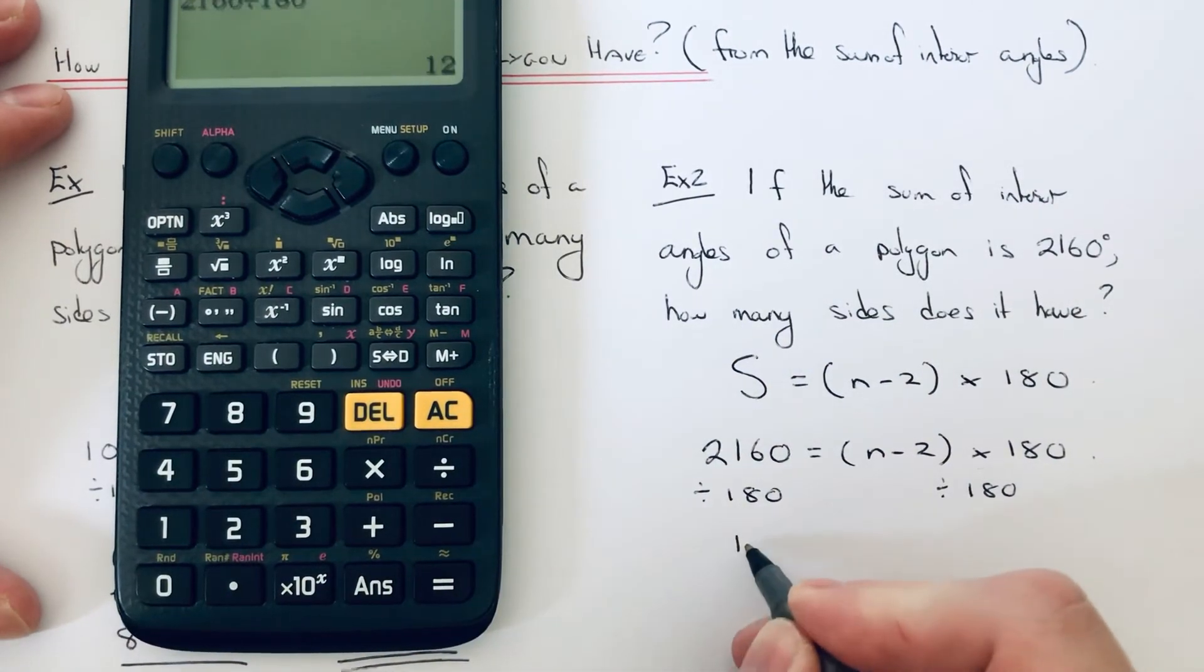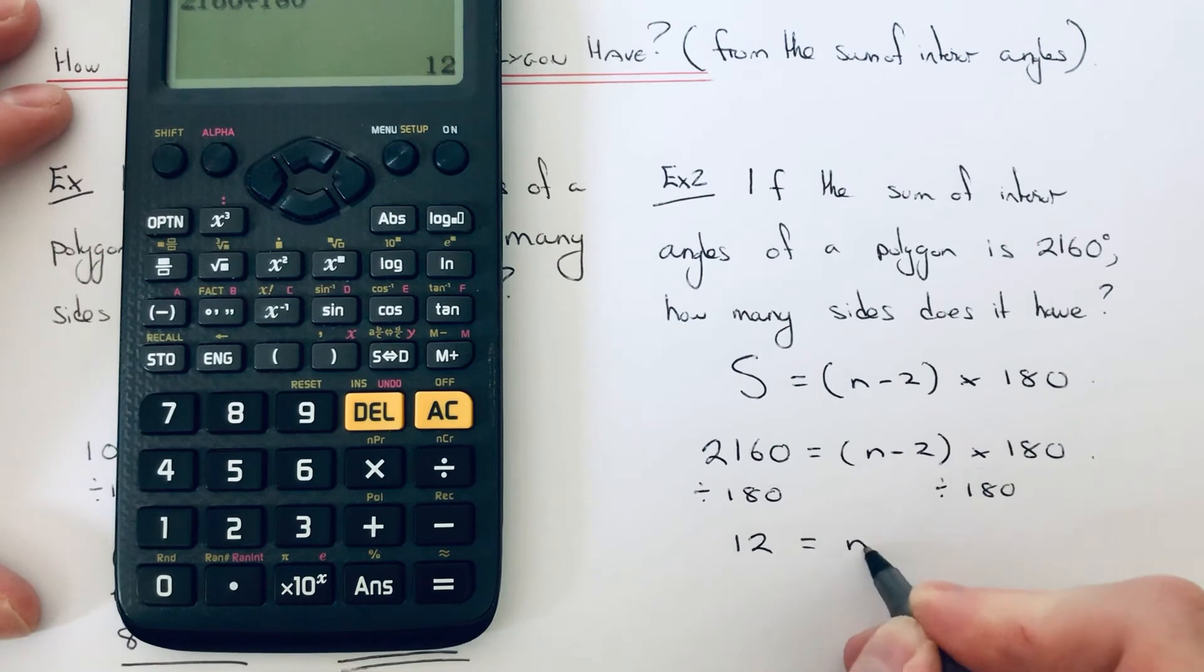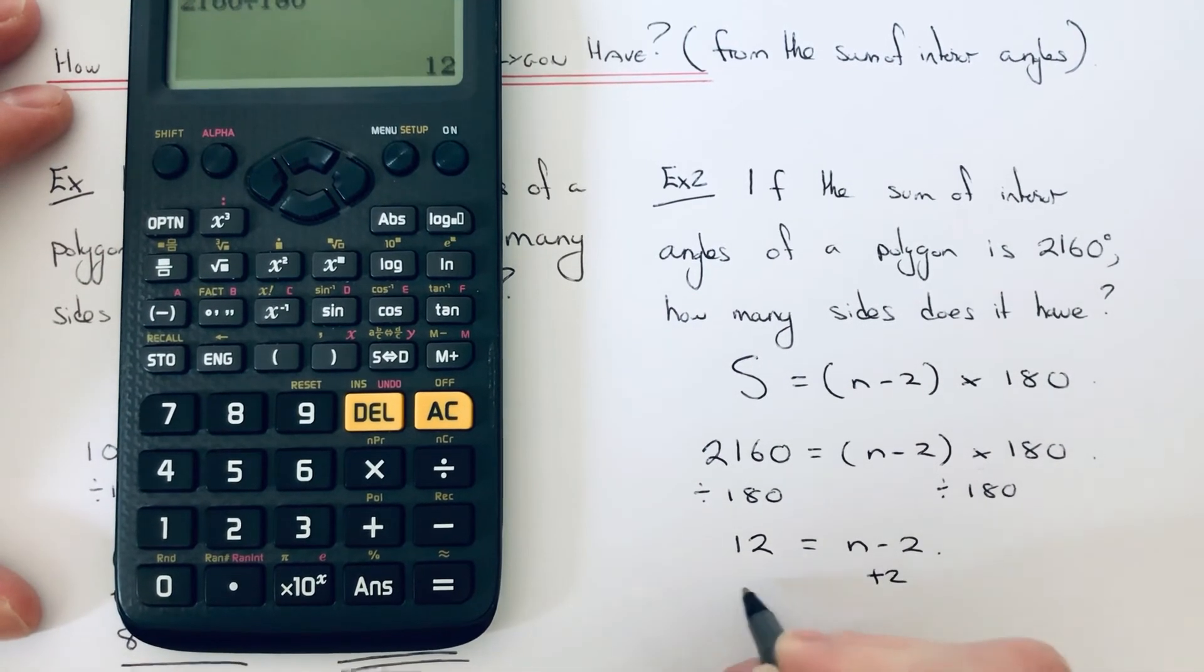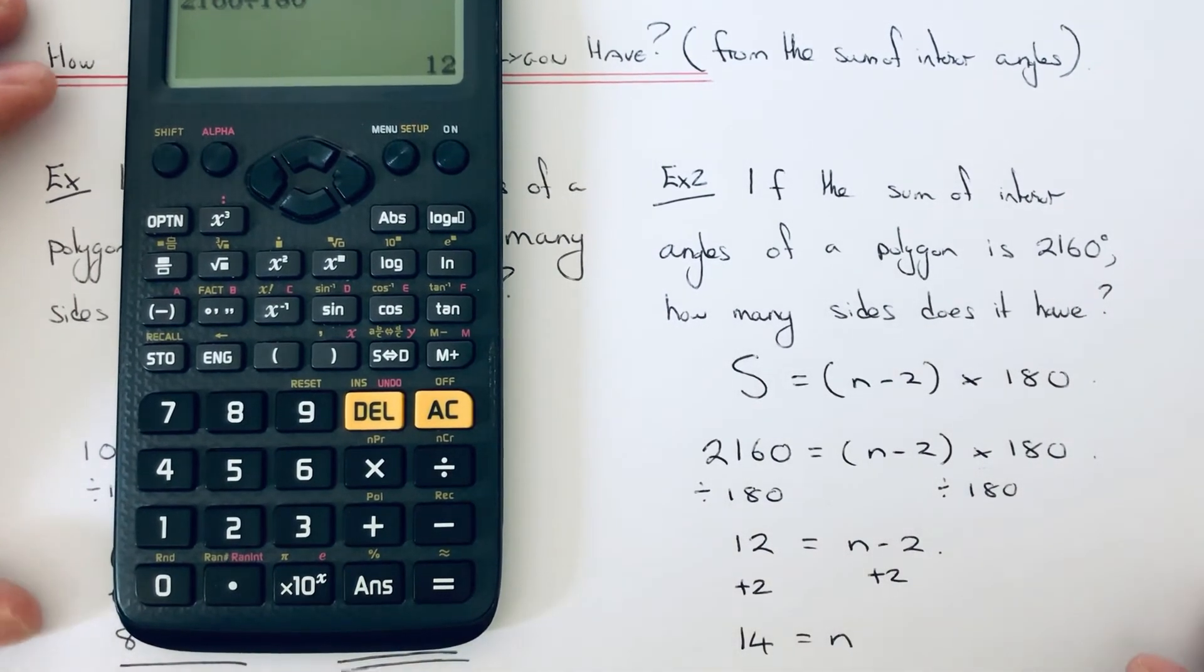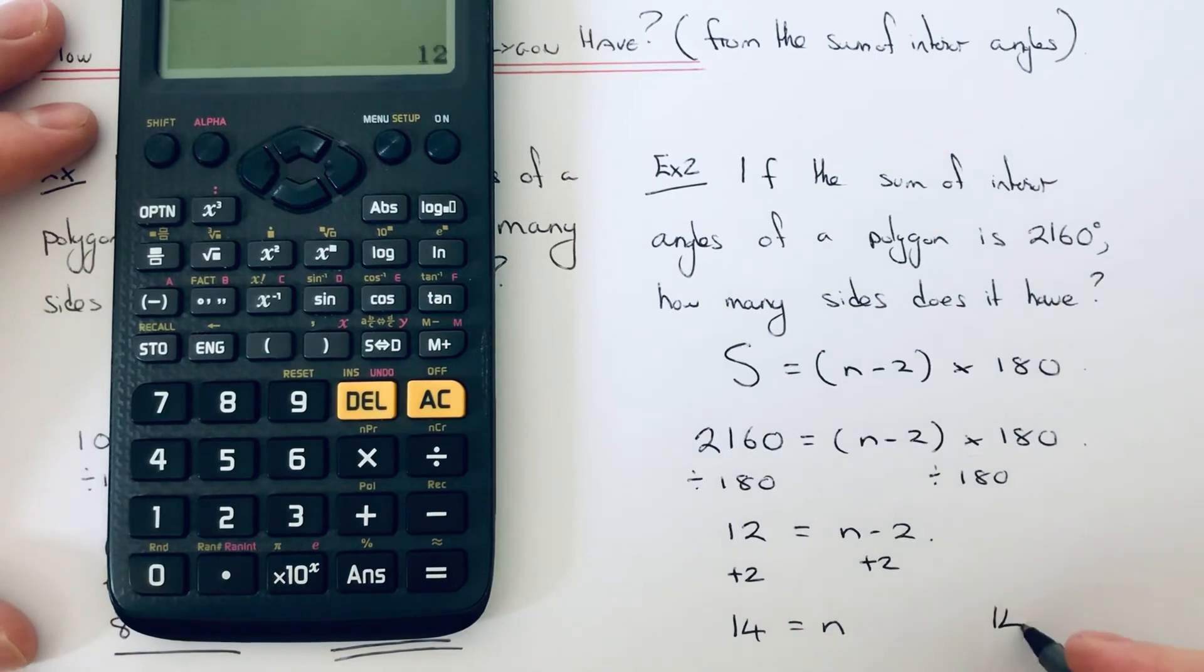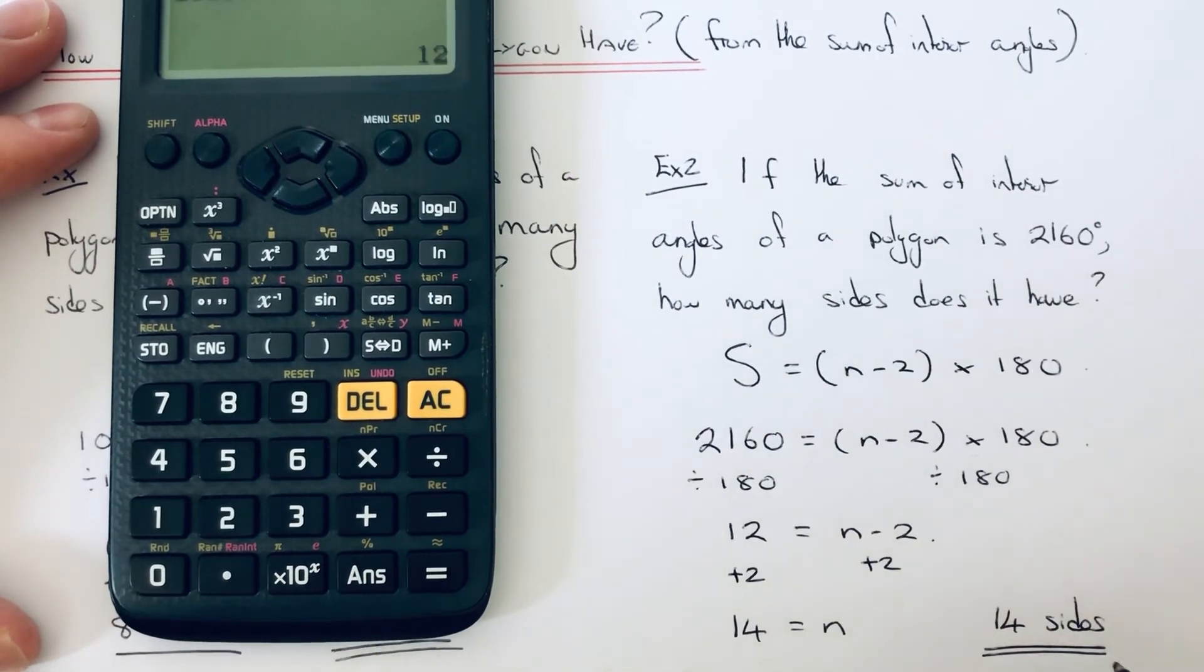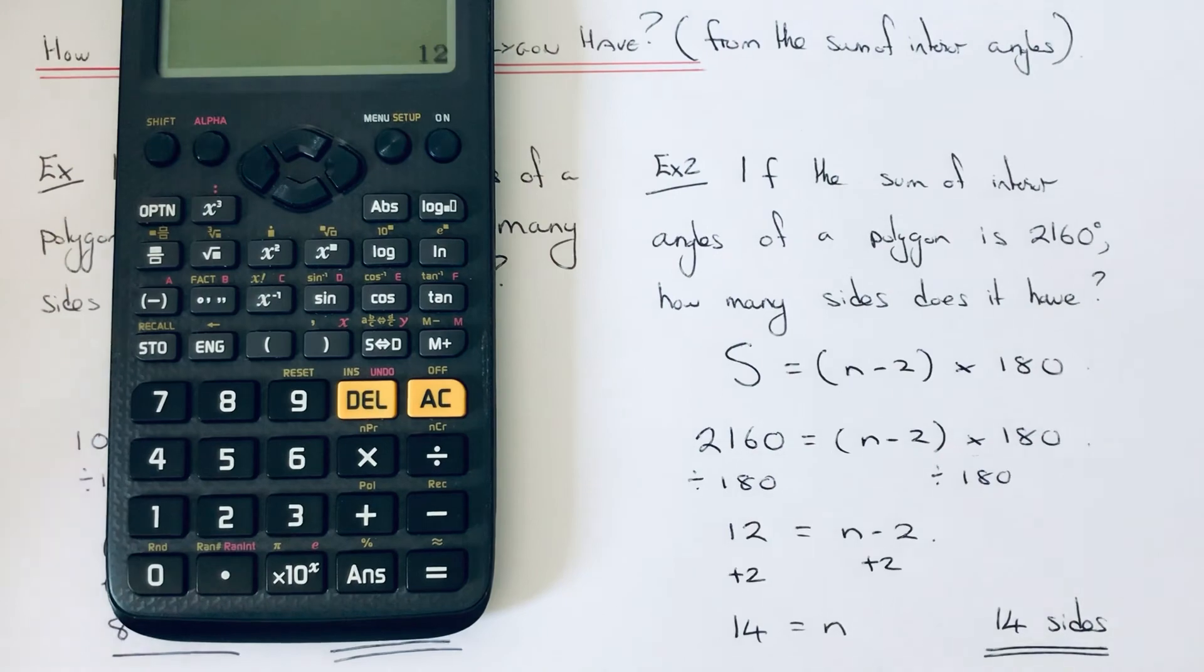That gives an answer of 12, and then we just need to add 2 to both sides. So 12 add 2 is 14. Our value of n is 14, so our polygon has 14 sides.